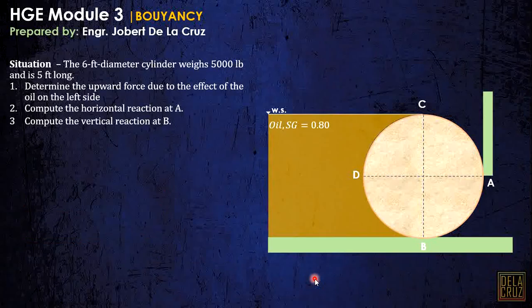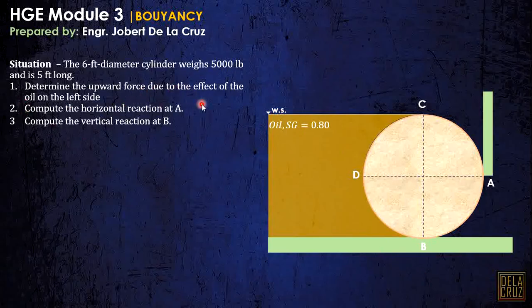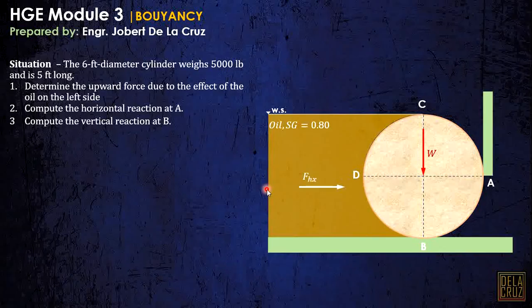Let's try another example. A 6-foot diameter cylinder weighs 500 pounds and is 5 feet long. We have oil acting on one side of the cylinder with a specific gravity of 0.8. We need to determine the upward force due to the effect of the oil on the left side — that means the buoyant force. We also have the hydrostatic force acting on the projected plane and a buoyant force.